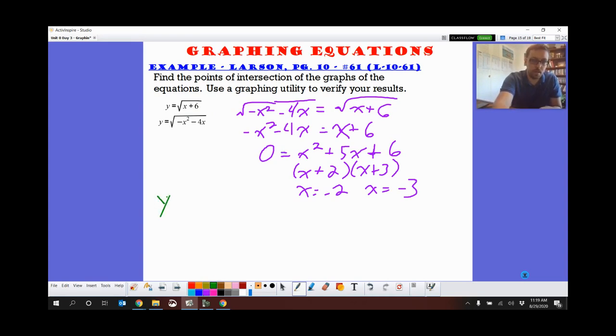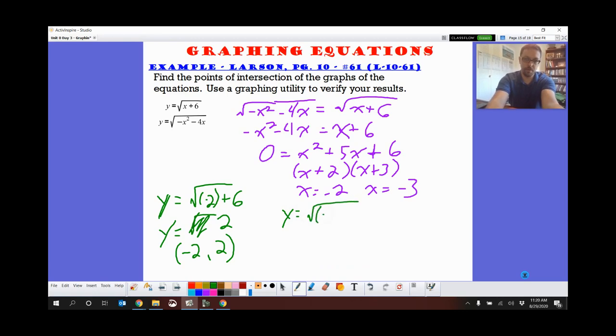So y equals the square root of x plus 6. If we do negative 2, we get y is the square root of 4, so y equals 2. So our first answer should be at negative 2 and 2. And then in our second one, we get y equals the square root of negative 3 plus 6, which equals the square root of 3. So we get our solution at negative 3, square root of 3.